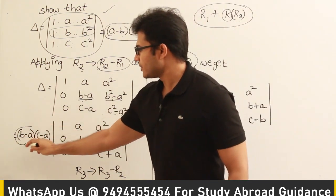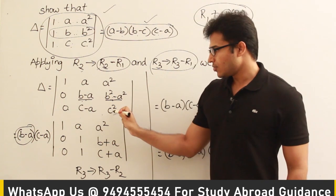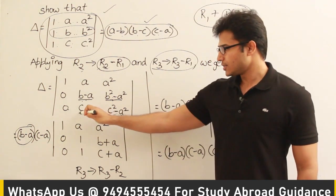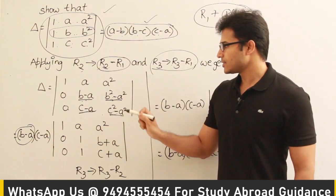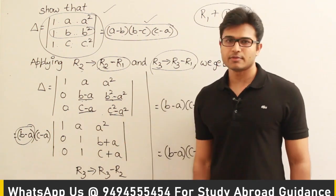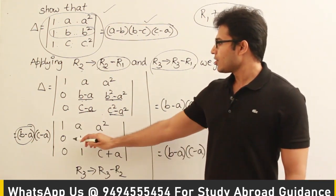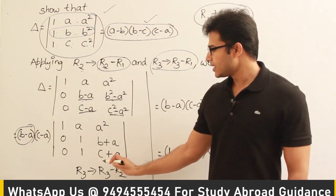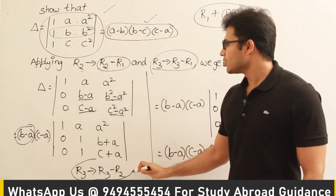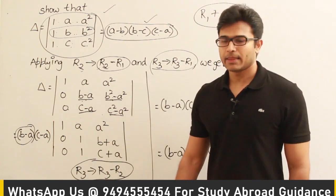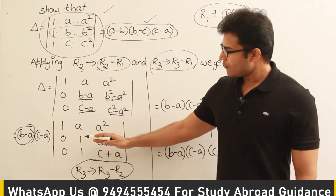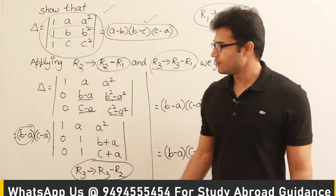So from this row I'm going to pull out b minus a, so I have pulled out b minus a. And from the third row I can pull out c minus a because it is c minus a and it is (c minus a) times (c plus a). Therefore I pulled out c minus a, and now I got this entire thing.